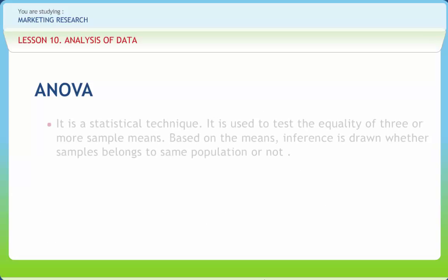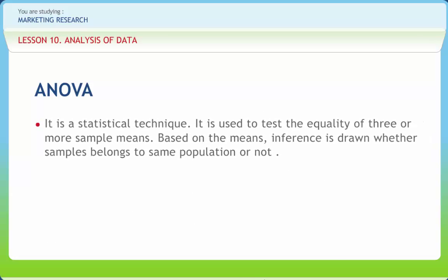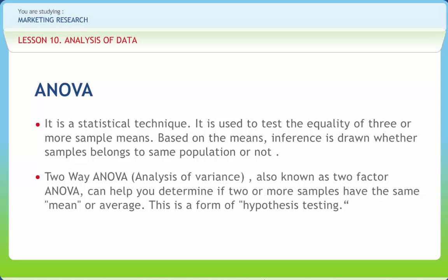It is a statistical technique used to test the equality of three or more sample means. Based on the means, inference is drawn whether samples belong to the same population or not. Two-way ANOVA, analysis of variance, also known as two-factor ANOVA, can help you determine if two or more samples have the same mean or average.